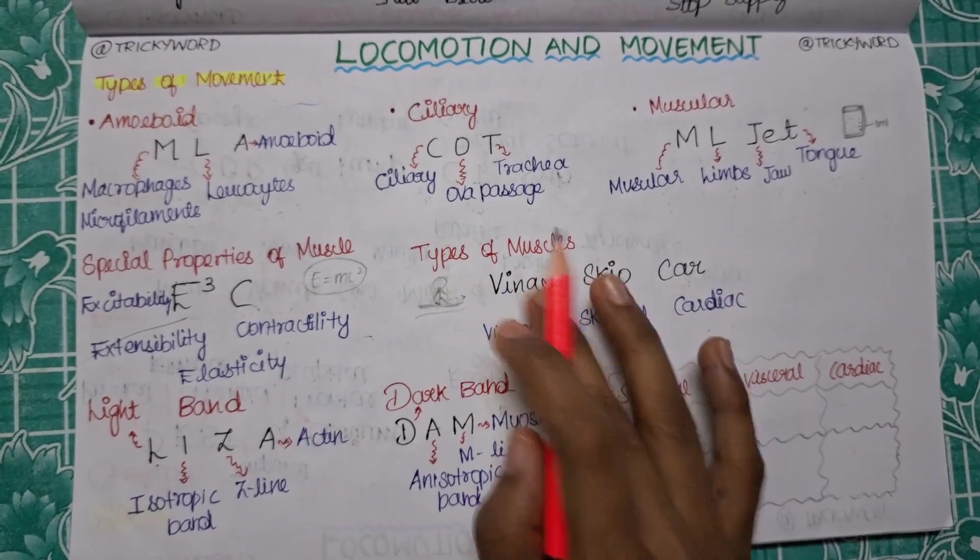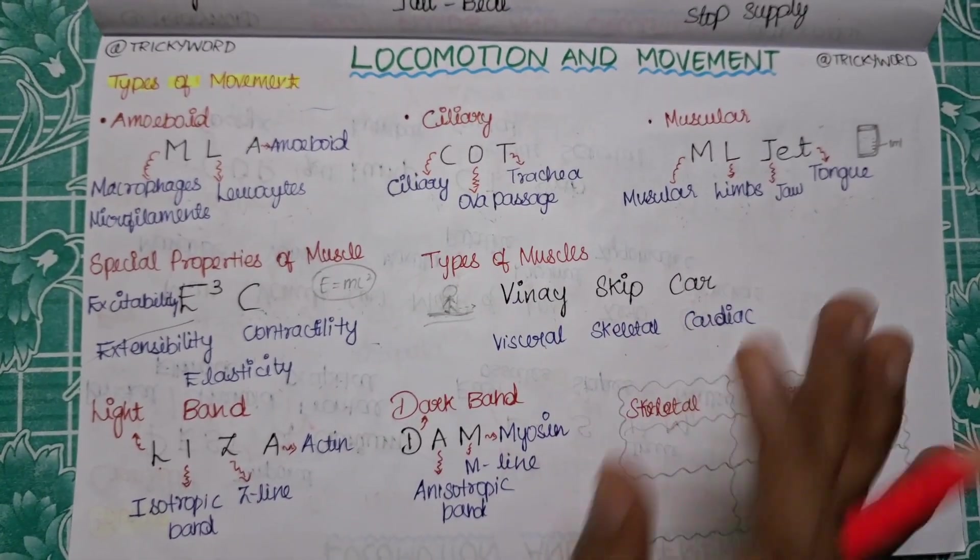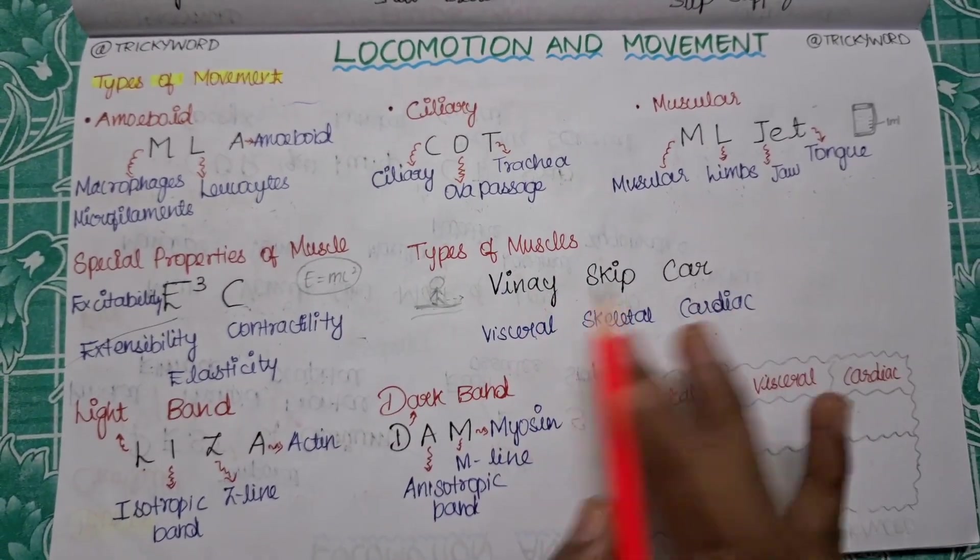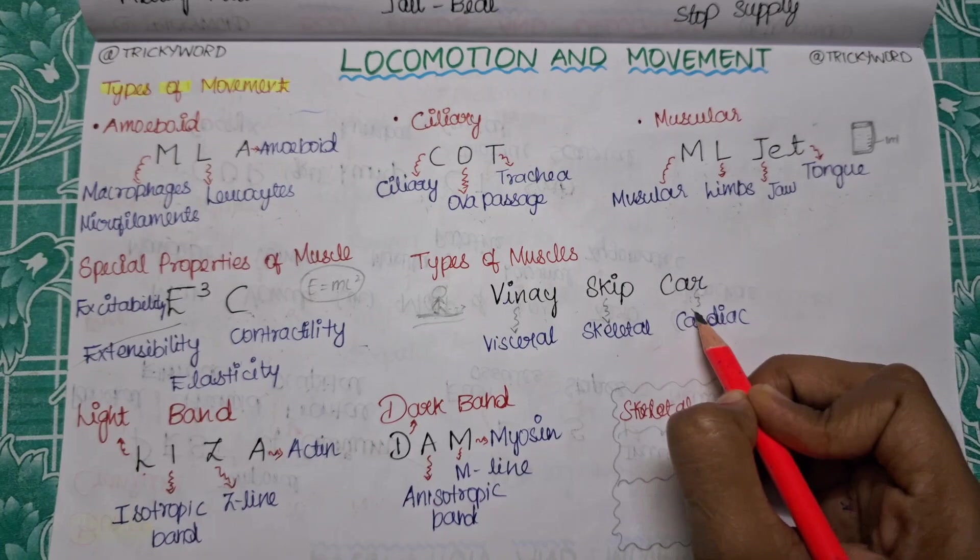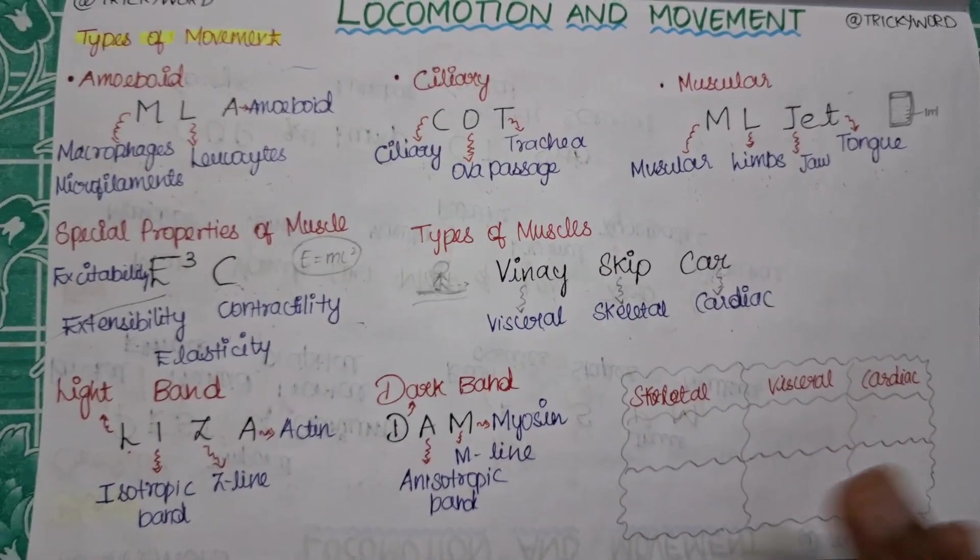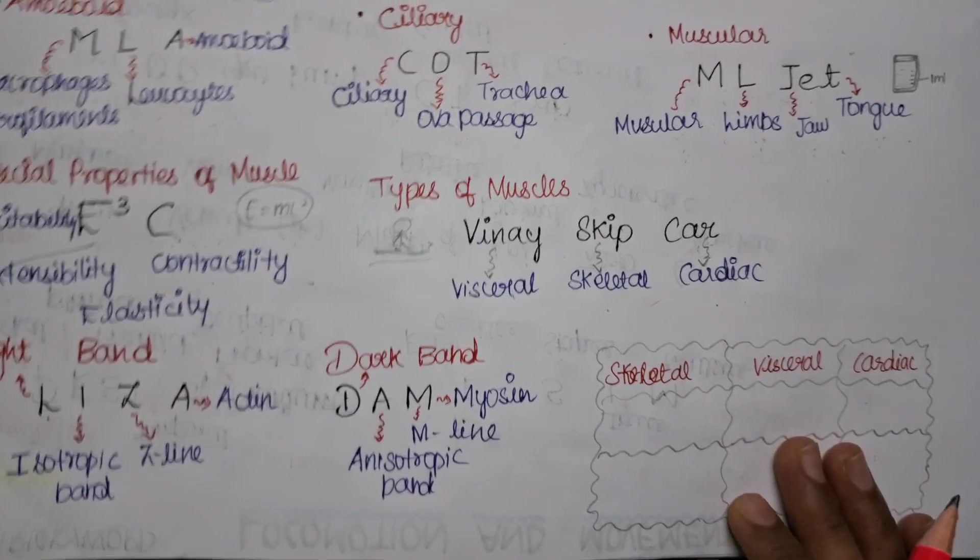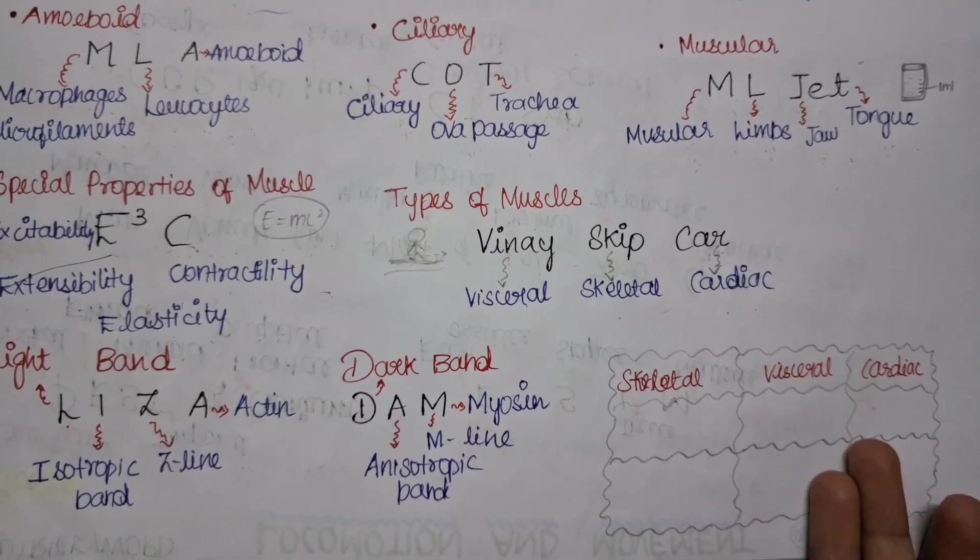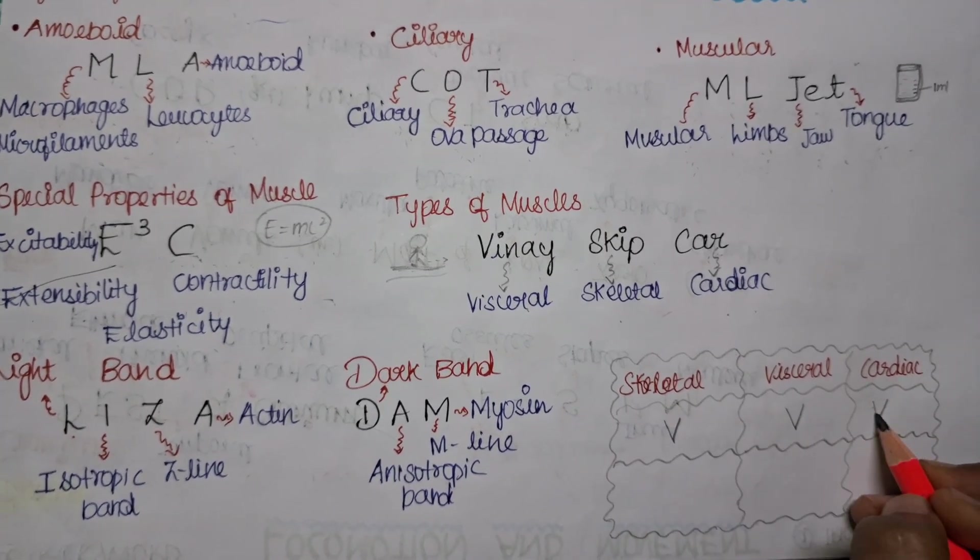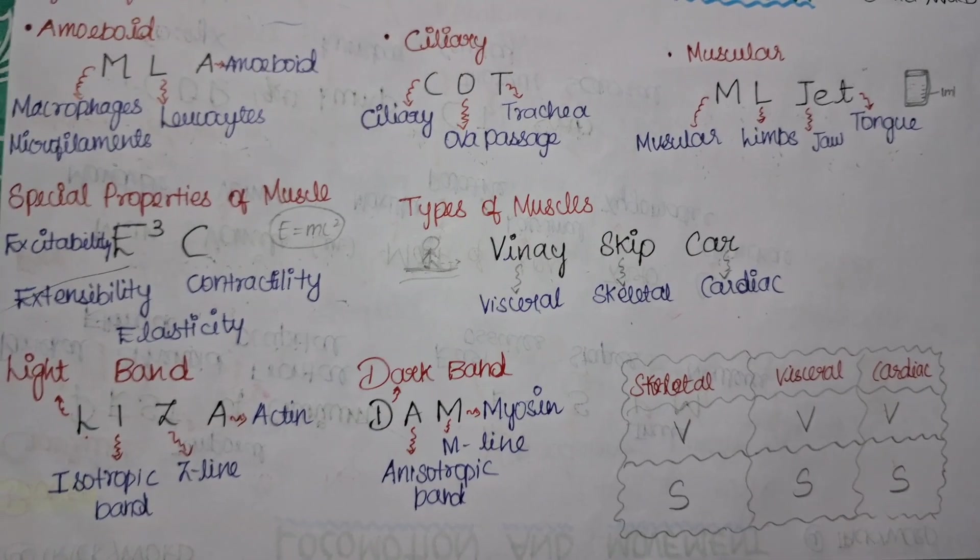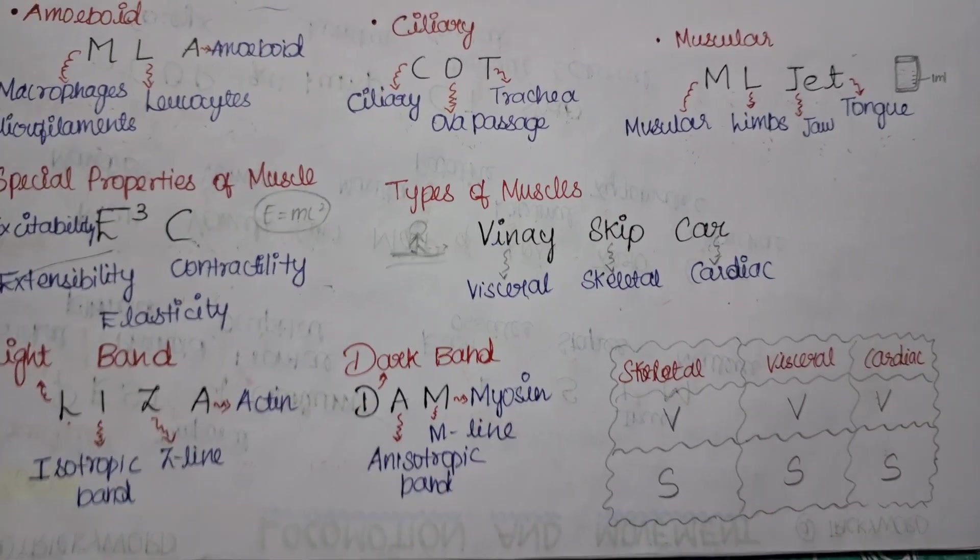Now types of muscle. There are three types of muscles. To remember that, there is a sentence: Binai skip car. Binai is a person who usually skips car and he will go by walk itself. Binai skip car. Binai is for your visceral muscle, skip is for your skeletal muscle, car is for your cardiac muscle. So these are the three types of muscle. Now whether they are voluntary or striated, there might be a little confusion. You need to write a box along with me and I will make it very easy to remember. You have to put VVV done, then you have to write SSS. Put a box: skeletal, visceral, and cardiac. VVV then SSS.